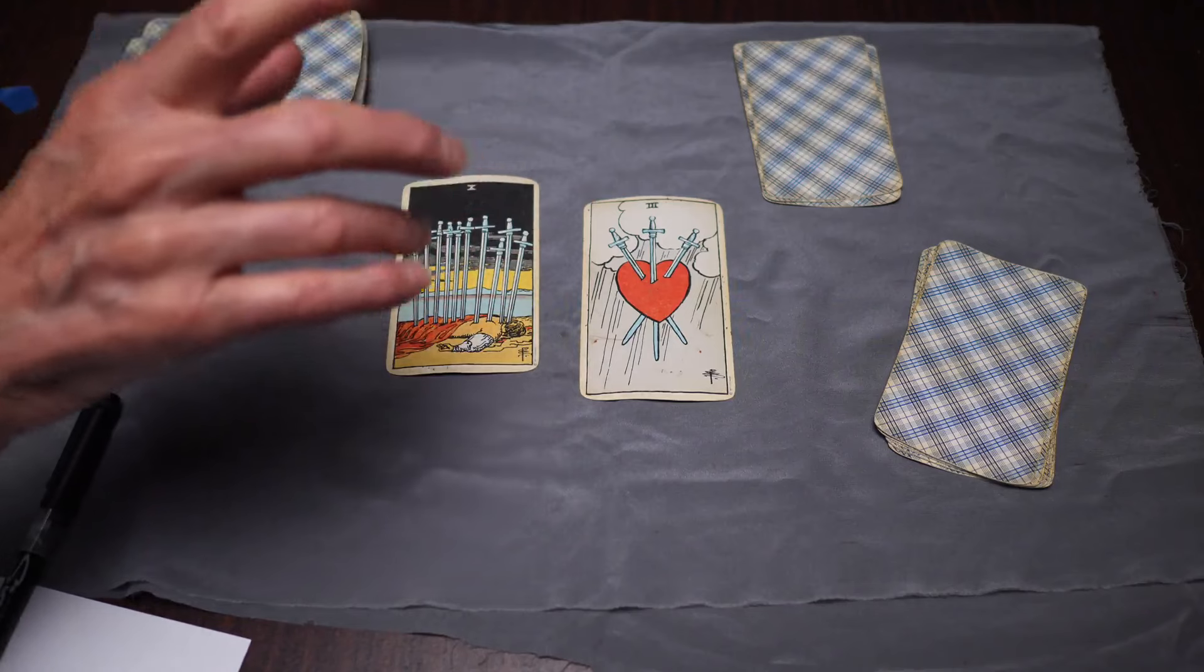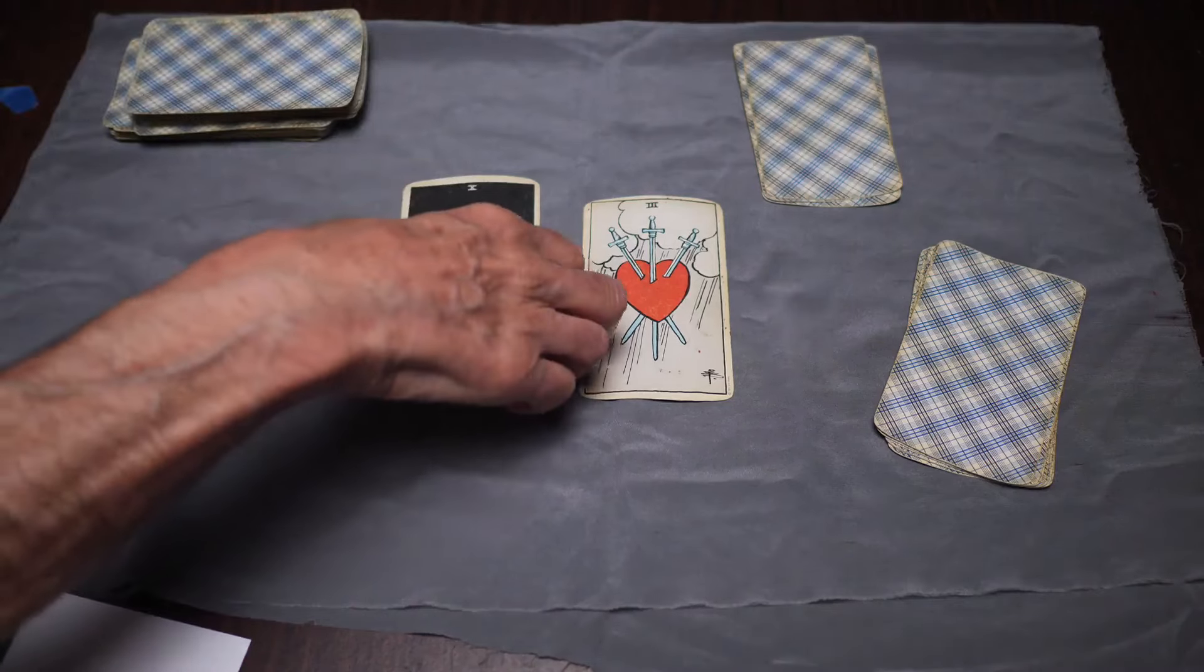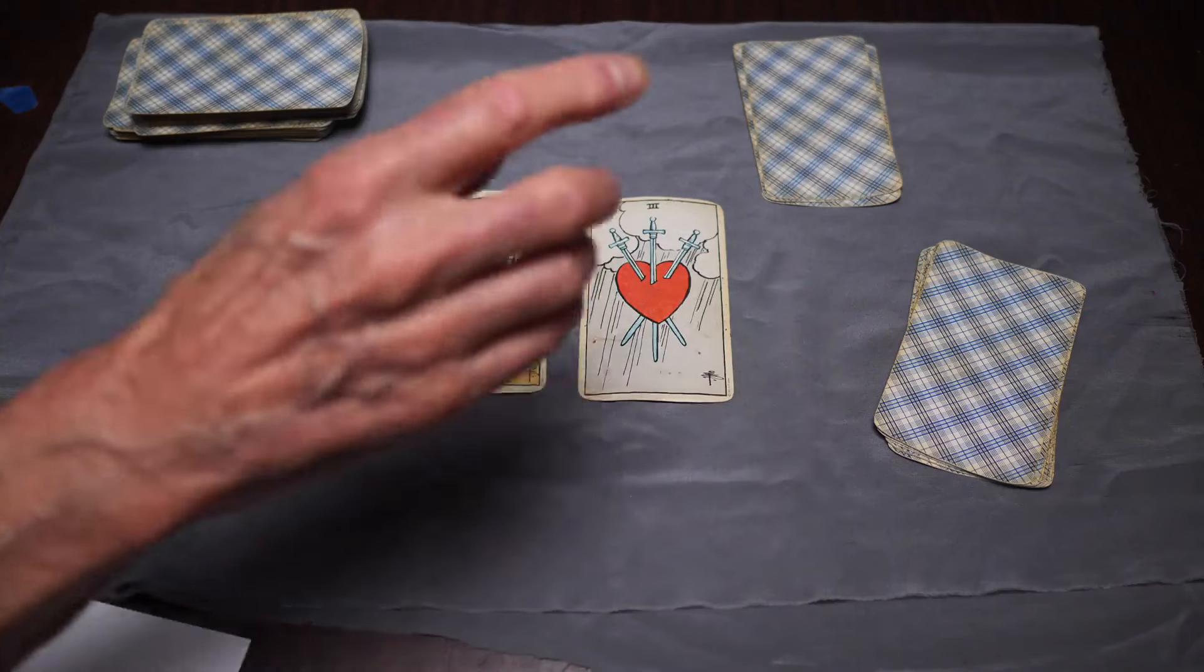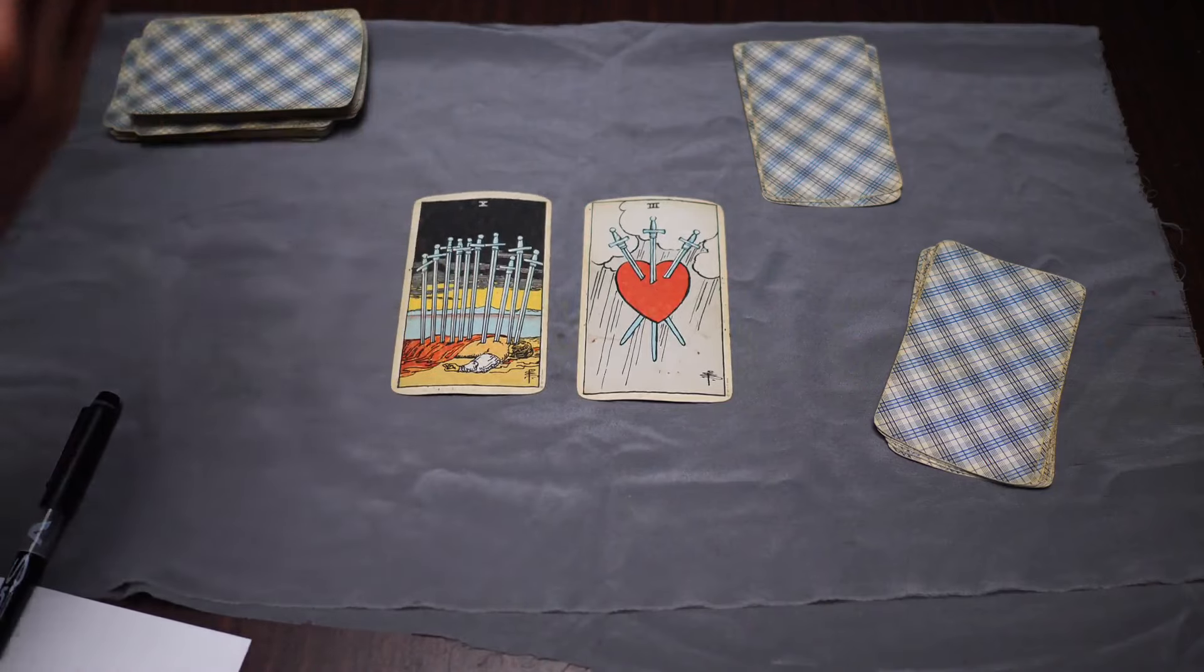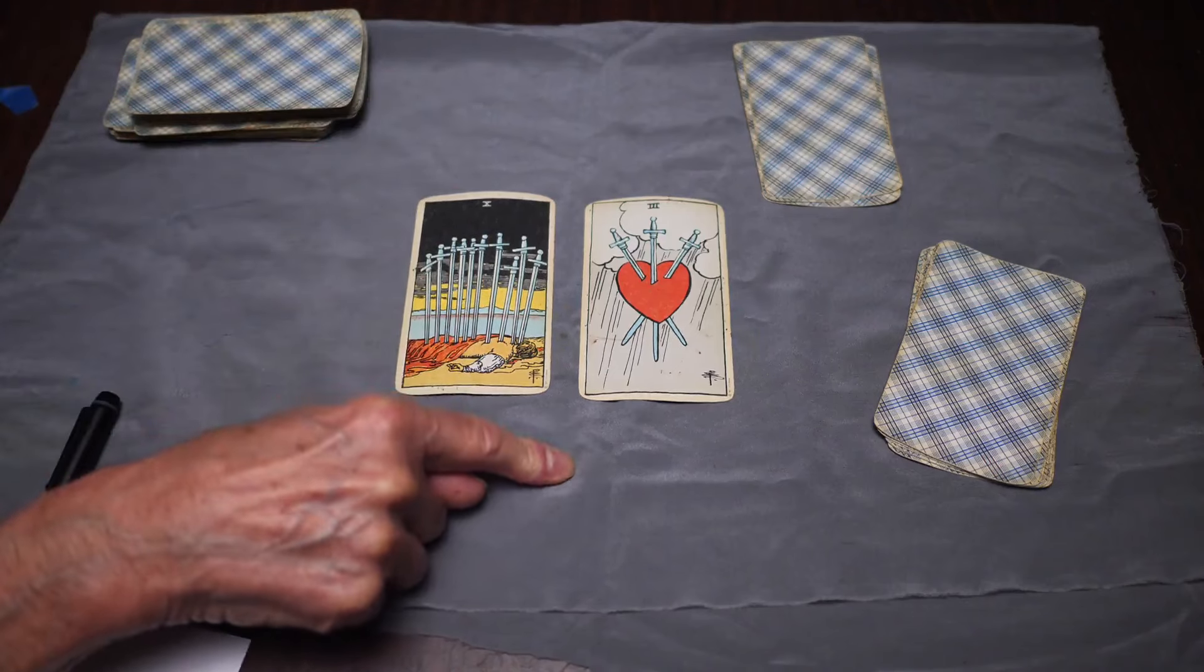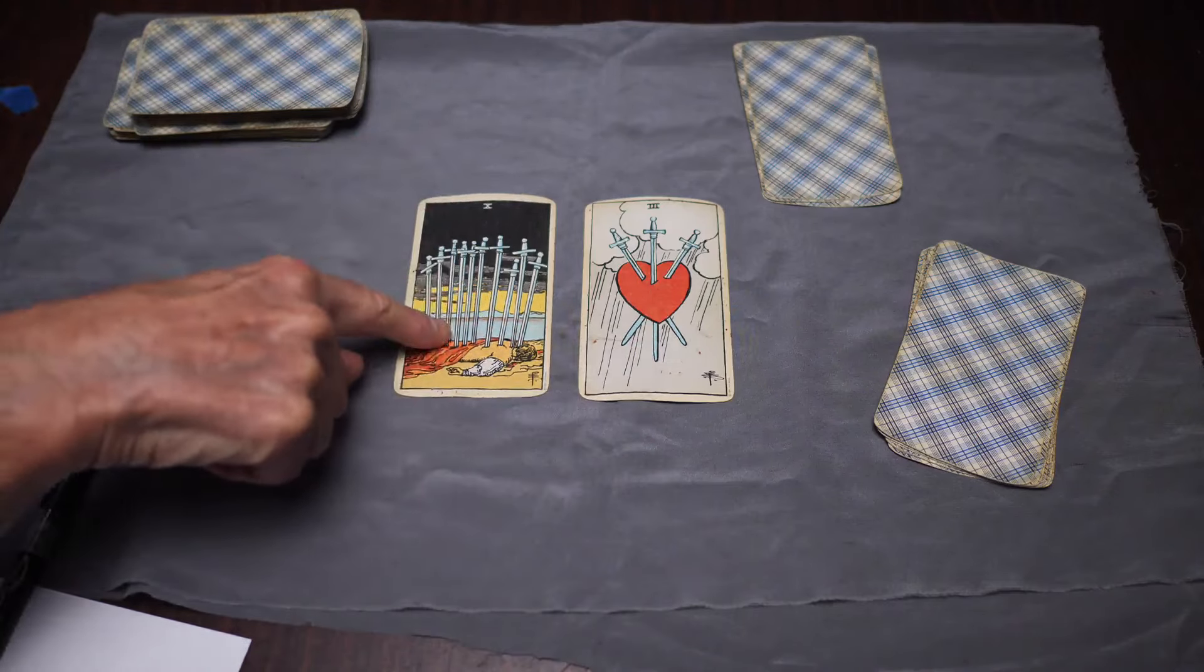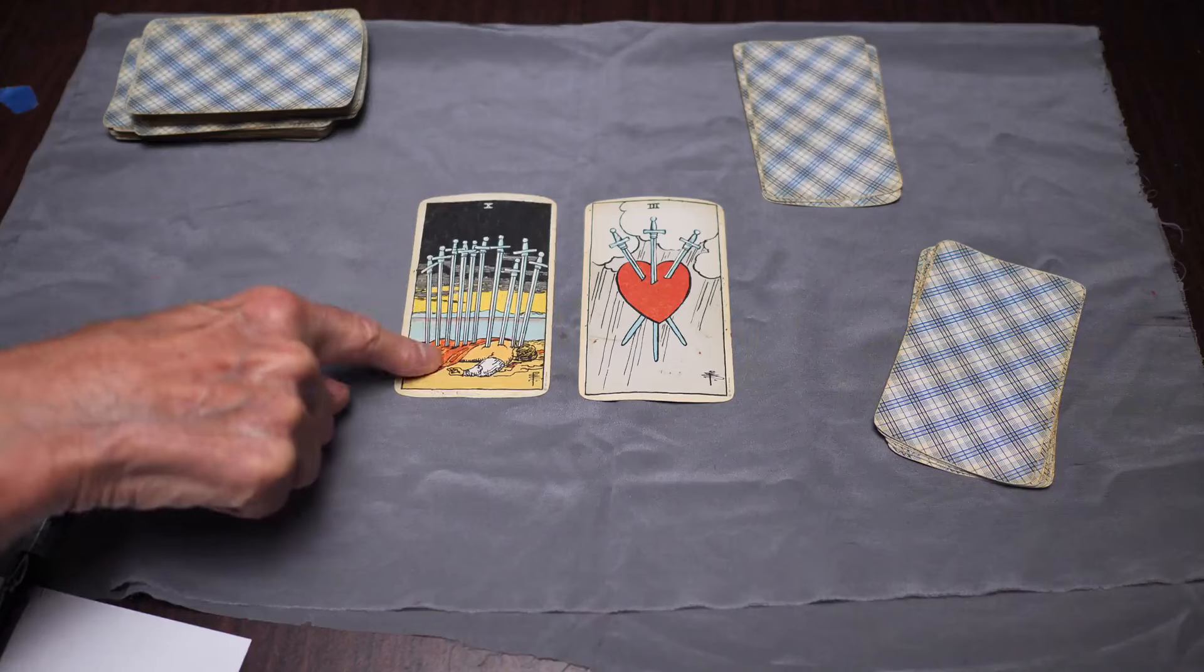Her method is you look at the problem card and the solution card and see what's the difference between the two. She looked at the Ten of Swords and related the card to the sun in Gemini. She said Gemini is light and dark, black and white. So the person suffering from depression is seeing everything in terms of black and white.